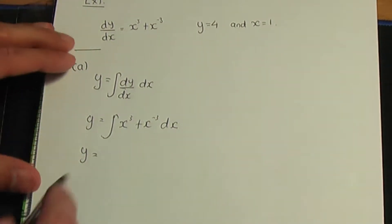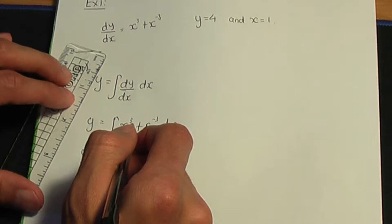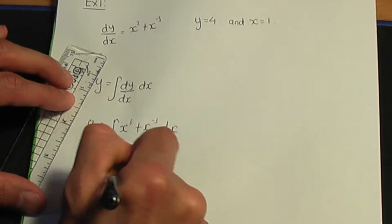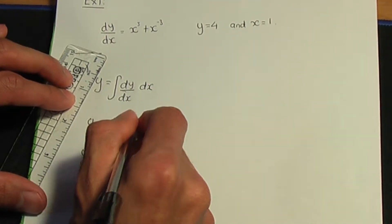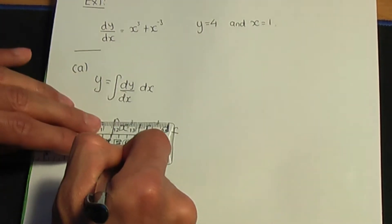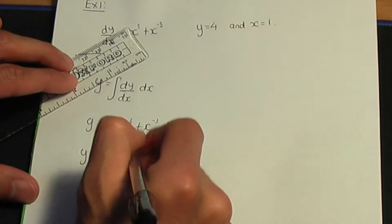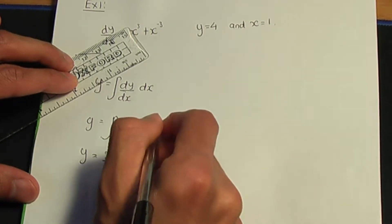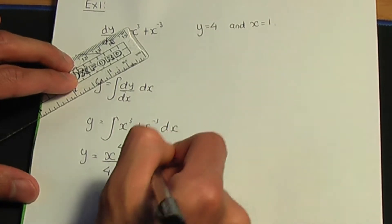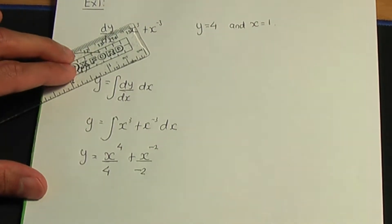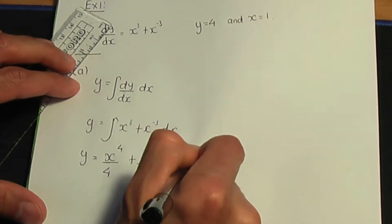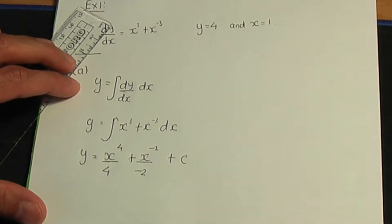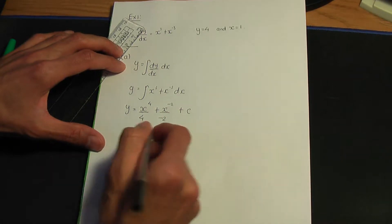Remember the idea of integration: add 1 to the power and divide by the result. So x cubed becomes x to the 4. When we integrate x to the minus 3, add 1 to the power — minus 3 plus 1 is minus 2 — divide by minus 2, and don't forget to add an integration constant C, because this is an indefinite integral.